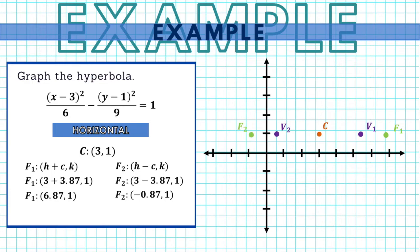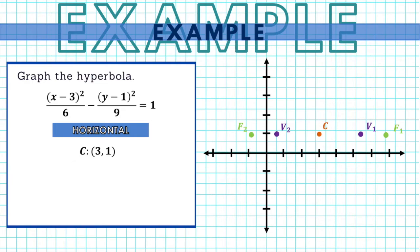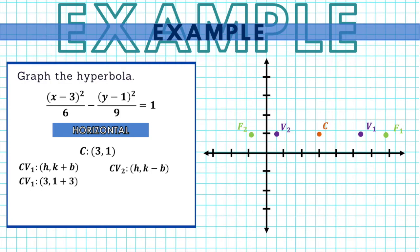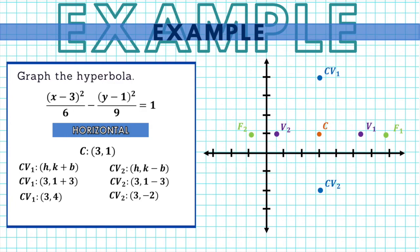For the co-vertices, we use the b value. Since this is a horizontal hyperbola, the co-vertices are above and below the center, so we add and subtract b along the y-coordinate. The first co-vertex is at (3, 1 plus 3), giving (3, 4). The second co-vertex is at (3, 1 minus 3), giving (3, negative 2), which is in the fourth quadrant.